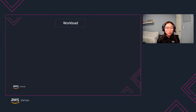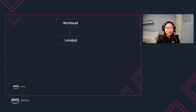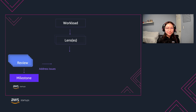When you conduct a Well-Architected review, you should scope the review to a single workload instead of multiple workloads. You can choose to apply lenses to your review, which extend the guidance offered by the Well-Architected review to specific industry and technology domains, such as machine learning or financial services. You'll save your first milestone after you complete your first review. At the end of your review, you'll want to work on remediating findings and prioritizing remediations based on risk category.